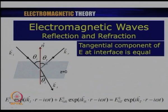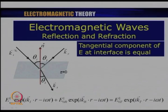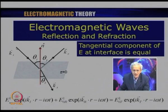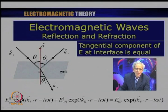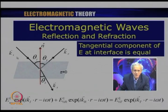Let us look at this picture. This is an interface — below is the second medium and above is the first medium. I will assume the first medium is air or vacuum and the second medium is glass. I have an electromagnetic wave incident on this interface, which I am taking as the x-y plane, i.e., the z=0 plane, at an angle of incidence θᵢ. The angle of incidence is the angle the incident ray makes with the outward normal to the surface. There is a reflected wave and a transmitted wave, represented as i, r, and t respectively.